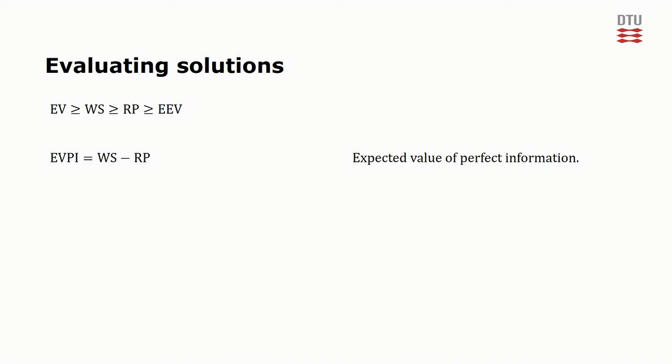If we knew EVPI, we could answer the question, how much can we expect the solution to improve on average if we had perfect information? This might allow a company to evaluate whether it could be beneficial either to delay the choice of x1, or to improve knowledge about the stochastic variables.